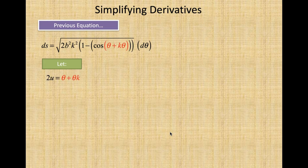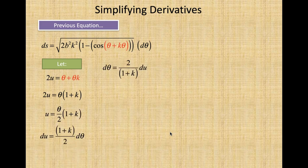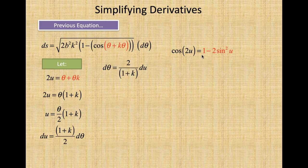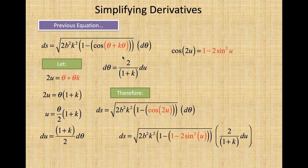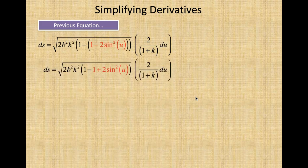Let 2u equal θ plus θk. Now we solve for u and for dθ. We get du, and we use the identity cosine 2u equals 1 minus 2 sine squared u. So we substitute 2u equals θ(1 + k) right there, and substitute 1 minus 2 sin²u for cosine 2u, and simplify.